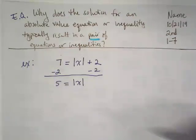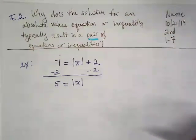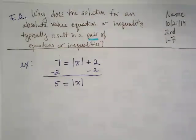So, can I direct you guys back up to the essential question? Why does a solution for an absolute value equation typically result in a pair of equations? What do you know is true about absolute values? Anybody remember the definition of an absolute value?